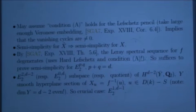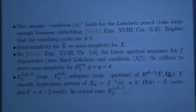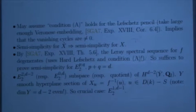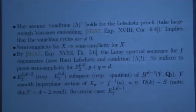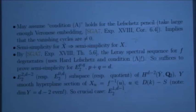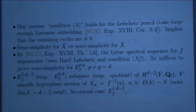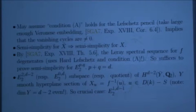We can start to run the machine of vanishing cycles of the Lefschetz pencil. First, the cohomology of X is a direct summand of the cohomology of X-tilde. So to prove semi-simplicity, it's sufficient to prove it for X-tilde. Then the main point is that the Leray spectral sequence for F degenerates because of the Hard Lefschetz theorem and also condition A. Unfortunately, the Hard Lefschetz theorem depends on Weil II in characteristic p.